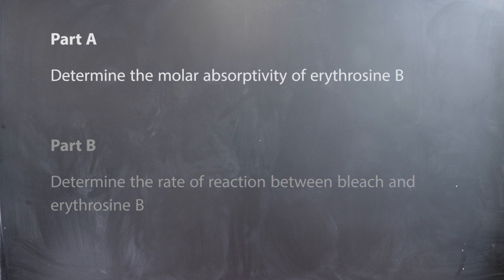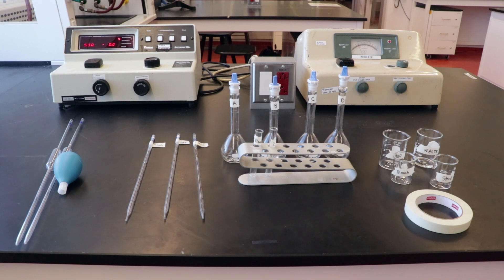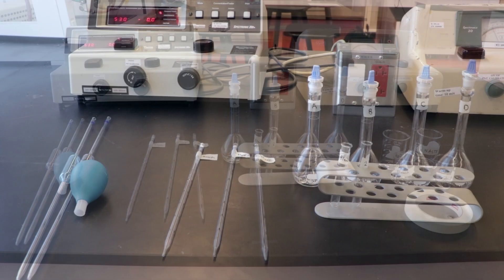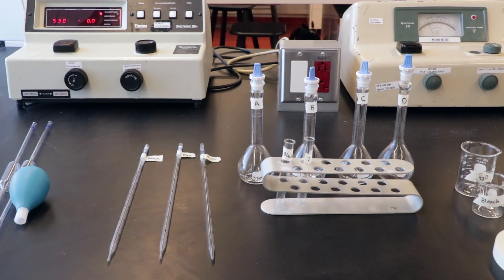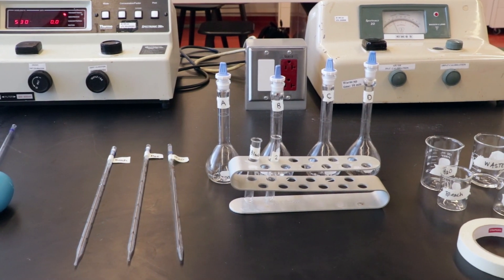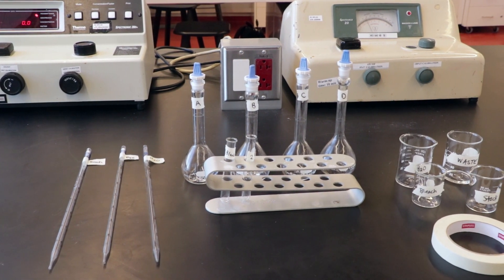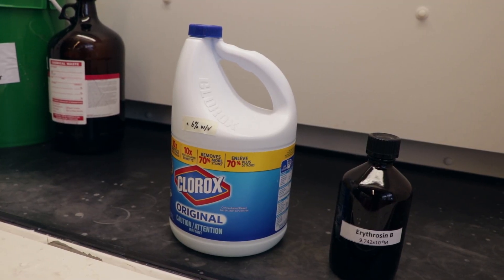We will begin with Part A. This is the apparatus you'll be using in this experiment. Each pair of students should have one rack of cuvettes. The pipettes and volumetric flasks should be found on the side bench. You will be mainly using erythrosine B and bleach in this experiment. Both these chemicals can be found in the TA fume hood.